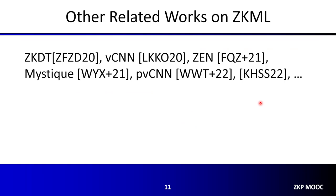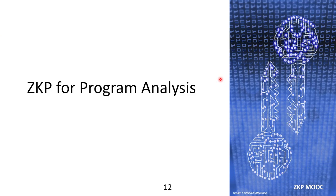Finally, I want to highlight other related works on zero-knowledge proofs for machine learning. This has become a very active research direction with a lot of interest from both academia and industry. There are papers for zero-knowledge proofs for decision trees, and then vCNN, Zen, Mystique, and pvCNN. In the most recent paper by Kong, Hashimoto, Stokka, and Sun, they support inference of ImageNet on a much larger scale using a Plonk-based proof system, with special Plonk-ish optimizations for matrix multiplications and inner products, and also support ReLU functions using lookup arguments.